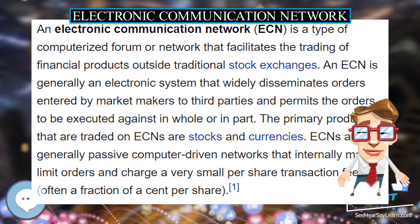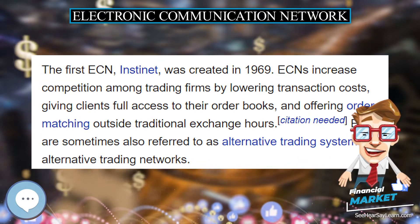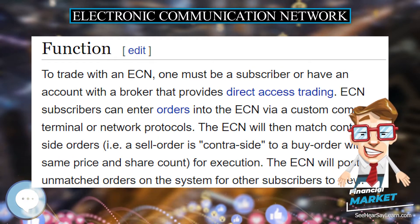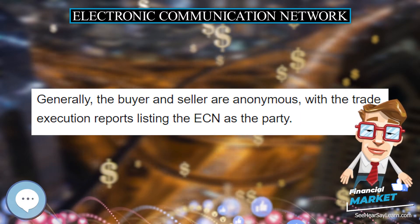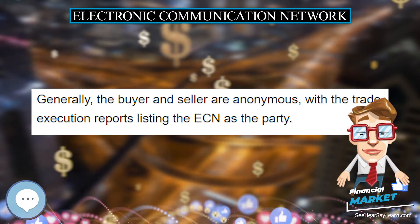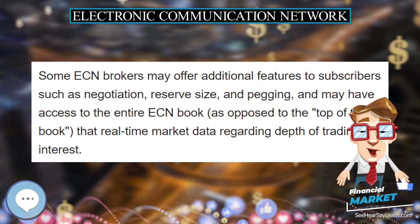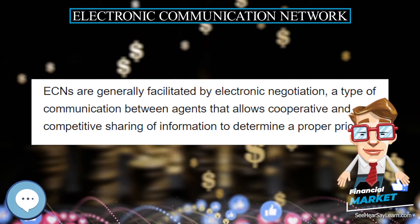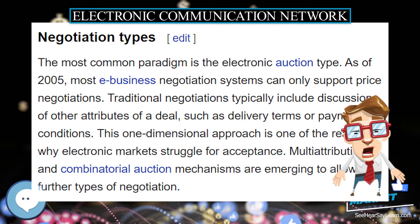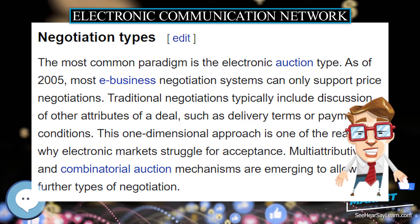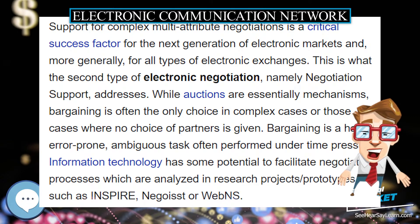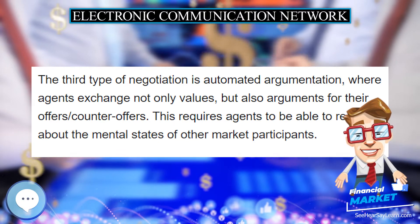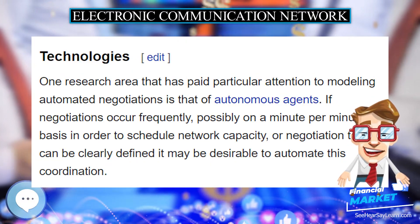An electronic communication network (ECN) is a type of computerized forum or network that facilitates the trading of financial products outside traditional stock exchanges. An ECN is generally an electronic system that widely disseminates orders entered by market makers to third parties and permits the orders to be executed against in whole or in part. The primary products traded on ECNs are stocks and currencies. ECNs are generally passive computer-driven networks that internally match limit orders and charge a very small per-share transaction fee, often a fraction of a cent per share. The first ECN, Instinet, was created in 1969.